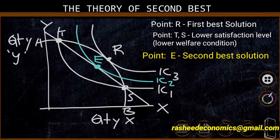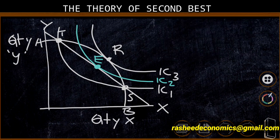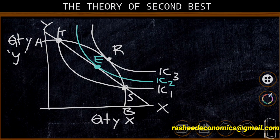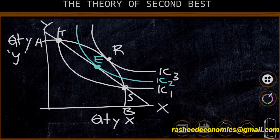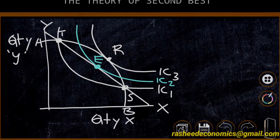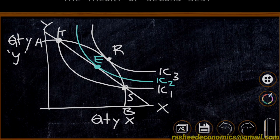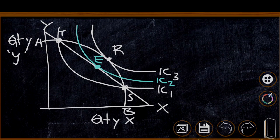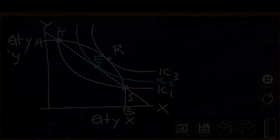The theory of second best suggests that interference in certain policies will lead to a decrease in welfare. External authorities or external agents should do nothing that disturbs the optimal situation of the system. If we cannot reach the optimum, we can rely on the second best. That is the theory of second best.